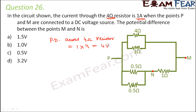So 4 volts is the potential difference across the 4 ohm resistor. Therefore the potential difference across the 3 ohm resistor would also be 4 volts. As a result, the potential difference between points P and M would also be 4 volts, because the potential between these two points would be the same as the potential between those two points, and therefore the potential between P and M equals 4 volts.